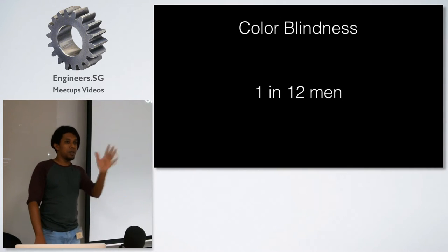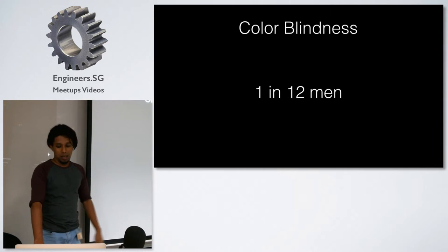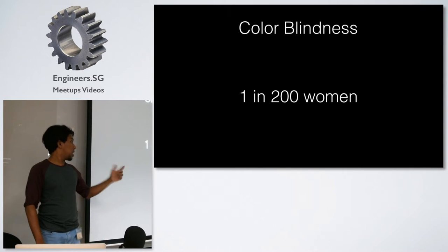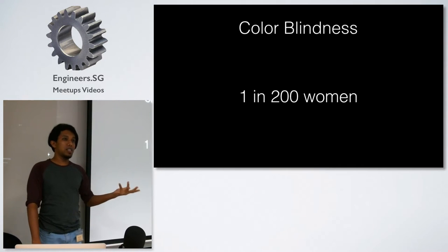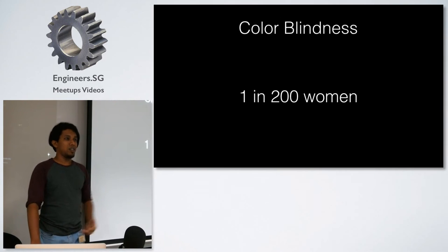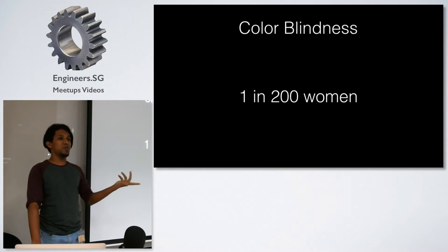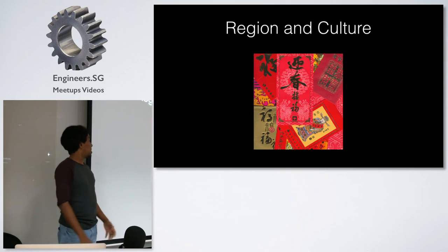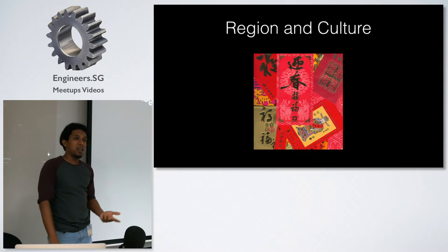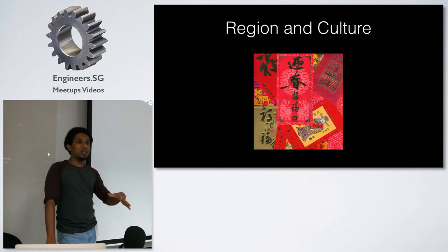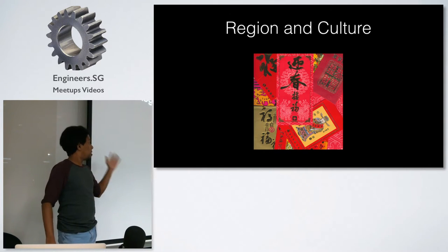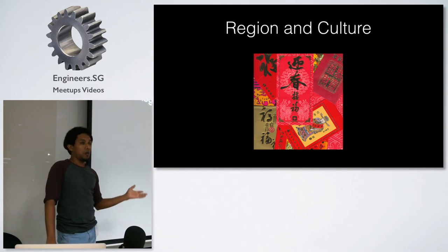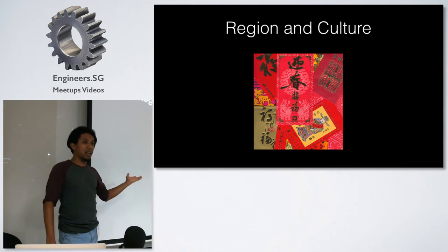If you use color alone to represent any kind of state, that's not going to be enough. You need to give an additional parameter to differentiate two statuses rather than using color alone. Surprisingly, women get color blindness at a much lower rate — about 1 in 200 — and there's a genetic reason for that. Region and culture also matter when using colors. You need to focus on your target audience and use color in a more appropriate way.